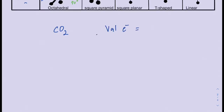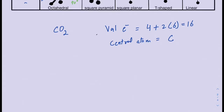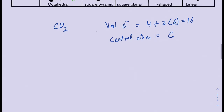Let's draw the Lewis structure and predict the geometry for CO2, carbon dioxide. The total valence electrons are 4 on carbon plus 6 on each of the two oxygens, giving a total of 16 valence electrons. Carbon is the central atom since carbon is mostly the central atom in these structures. Place the carbon in the center with the oxygens around it.